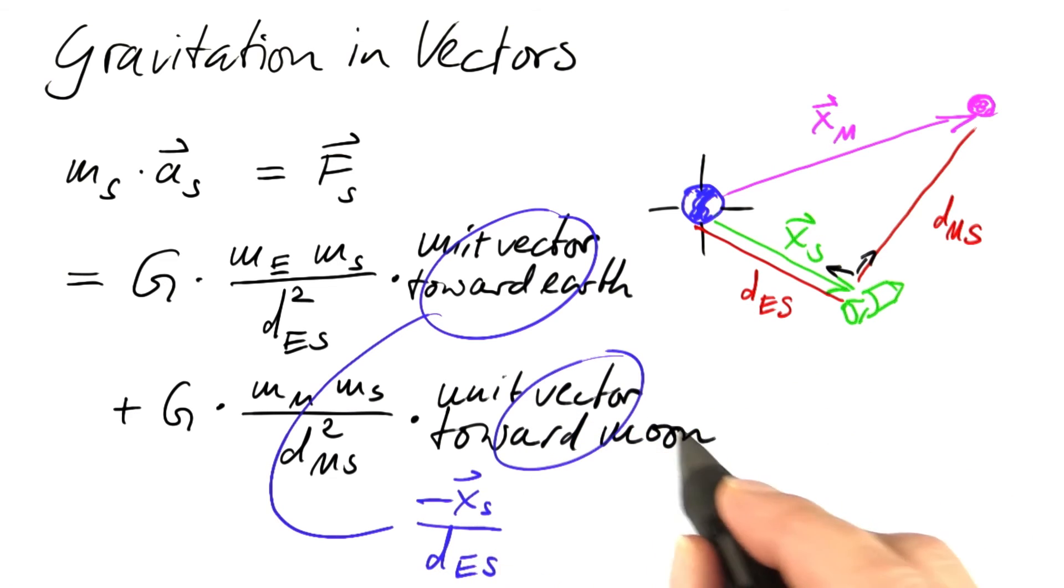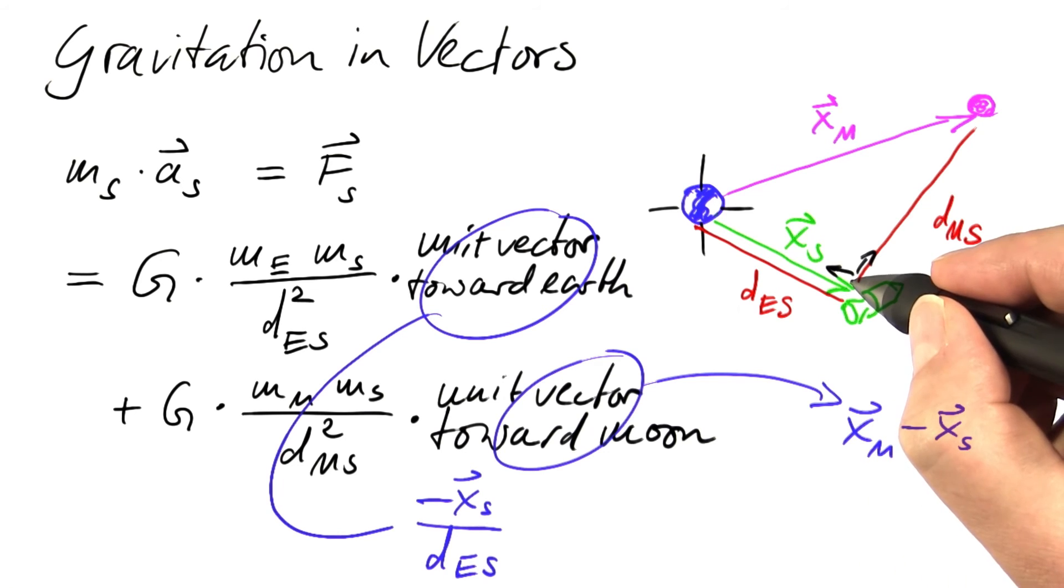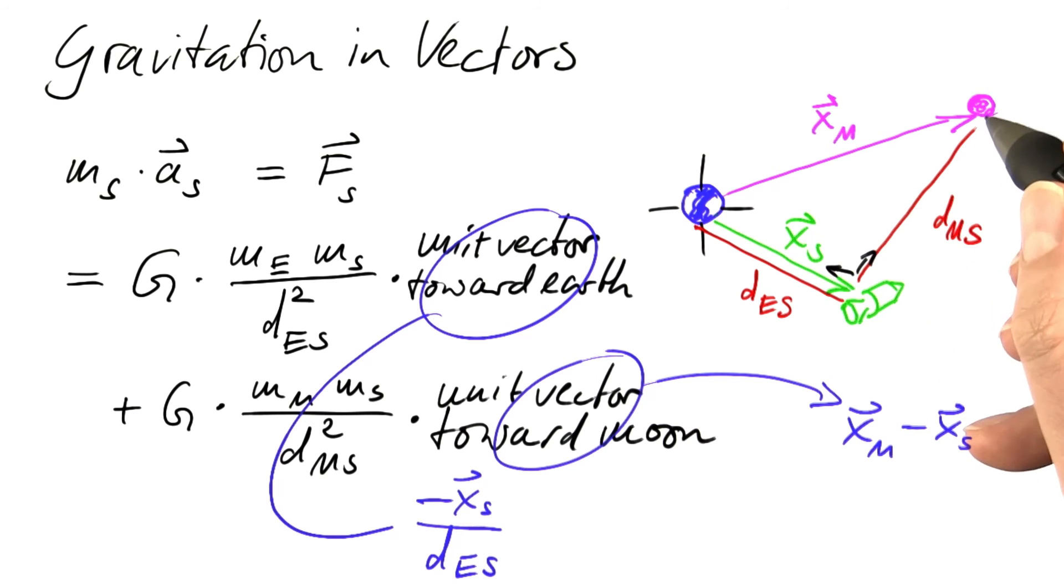For the second one, we can take the difference vector x moon minus x spacecraft, that's a vector that has its tail at the spacecraft and its tip at the moon, and we divide by the length of that vector, which is the distance from the moon to the spacecraft.